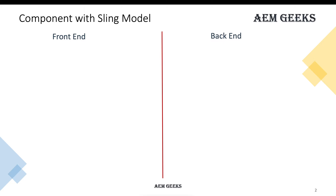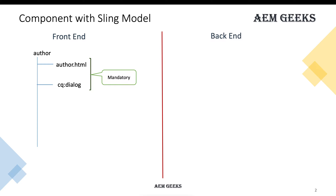We can categorize a component into front-end and back-end parts. The front-end contains all the rendering logic, and the back-end controller processes the business logic and returns data to the front-end. For the front-end part, suppose I am creating a component named 'author'. This component should have a few mandatory items like dialogs and a Sightly file where your rendering logic starts. You should always have a Sightly file as the starting point of your rendering, and a dialog to take input from the content author and display it on the page.